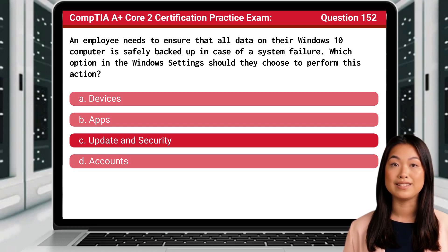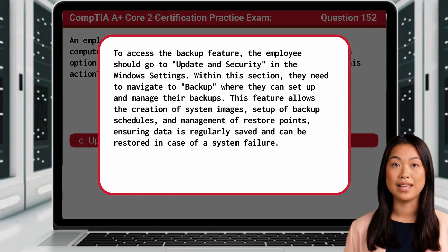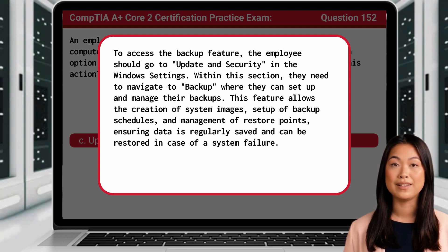The answer is C: Update and Security. To access the backup feature, the employee should go to Update and Security in the Windows settings. Within this section, they need to navigate to Backup, where they can set up and manage their backups. This feature allows the creation of system images, setup of backup schedules, and management of restore points, ensuring data is regularly saved and can be restored in case of a system failure.